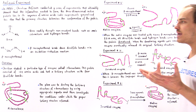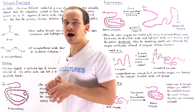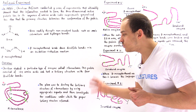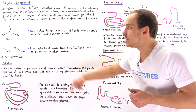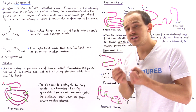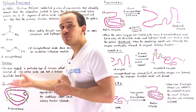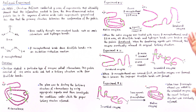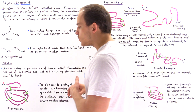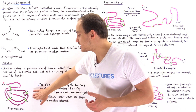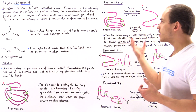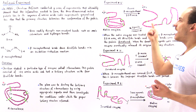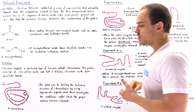The plan was to destroy the tertiary and secondary structures of the ribonuclease using these denaturing agents, and then to see under which conditions the native structure would reform. In experiment number one, he took the active ribonuclease enzyme and mixed it with an excess amount of beta-mercaptoethanol and 8 molar urea.